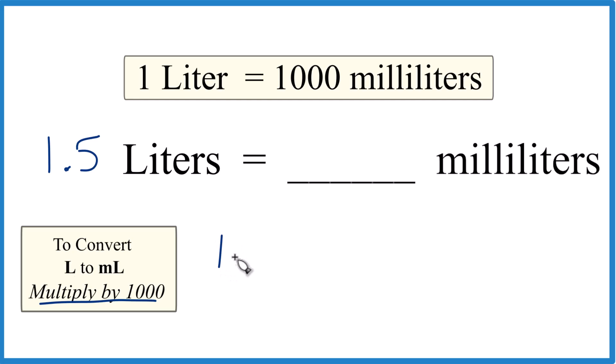So 1.5 times a thousand, and that's a thousand milliliters in one liter. That's our conversion factor, milliliters per liter.